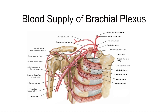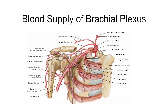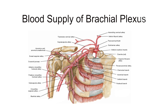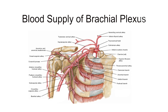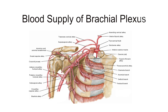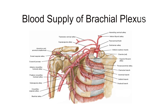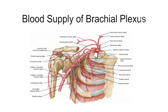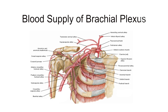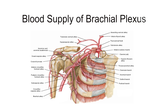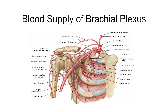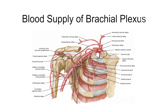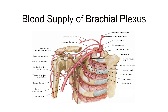The blood supply of the brachial plexus is based largely on the subclavian artery and its branches, though variations exist. Generally, the vessels involved are the vertebral and the ascending and deep cervical and the superior intercostal arteries. The cord and rootlets of the cervical nerves are supplied by the anterior and posterior spinal branches of the vertebral artery. The trunks of the plexus are supplied by the muscular branches of the ascending and deep cervical arteries and superior intercostals, and occasionally by the subclavian itself.